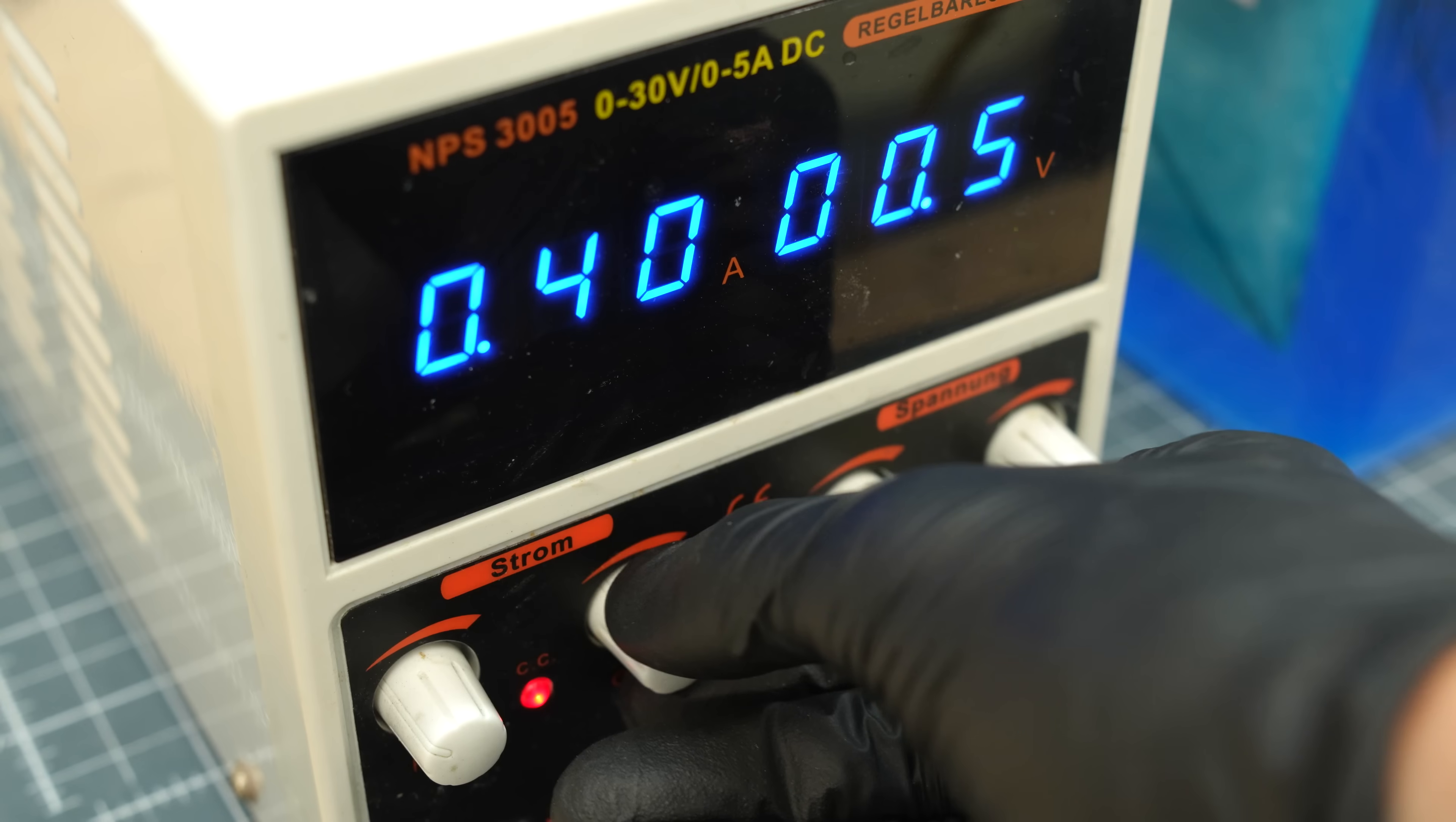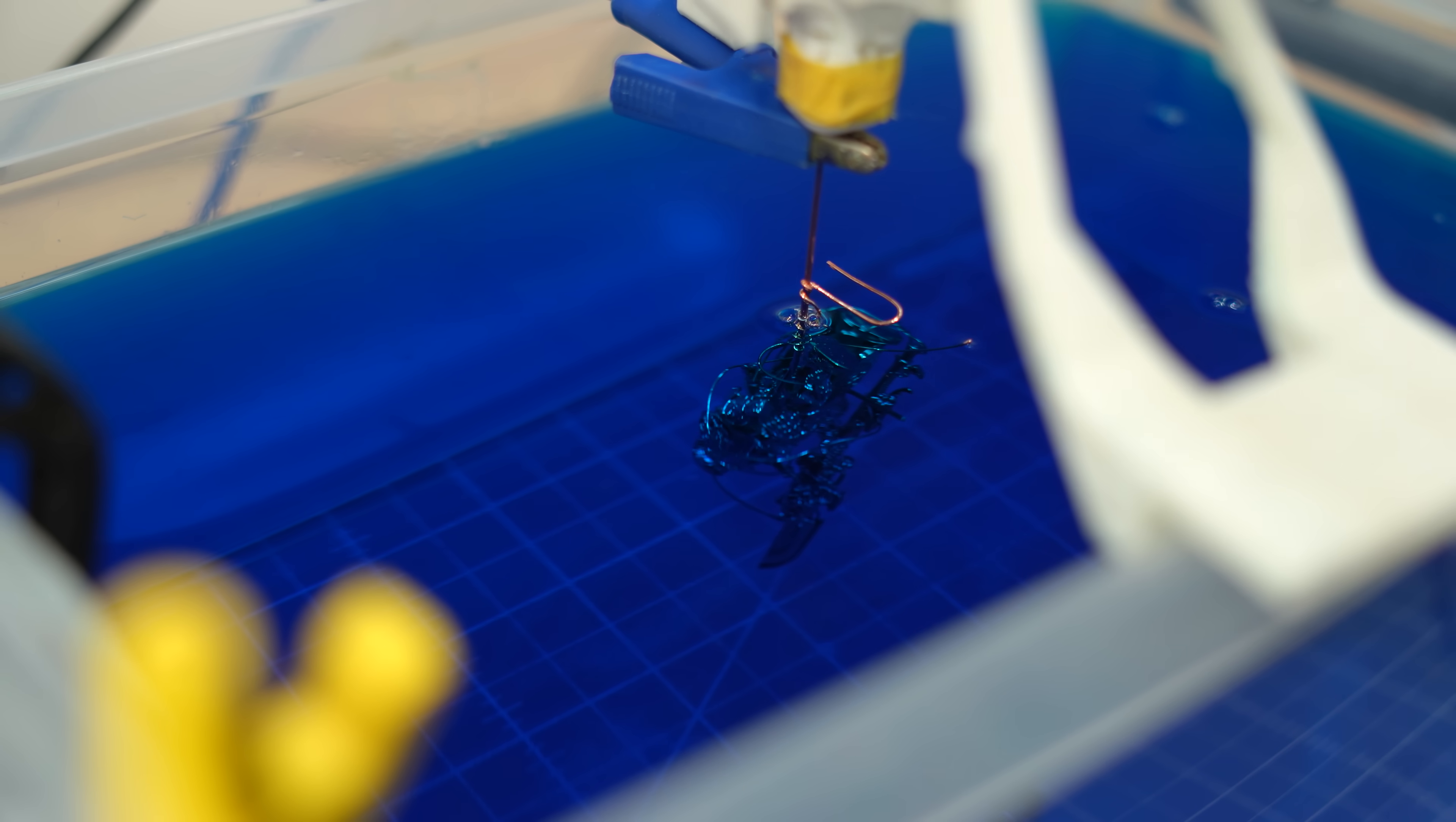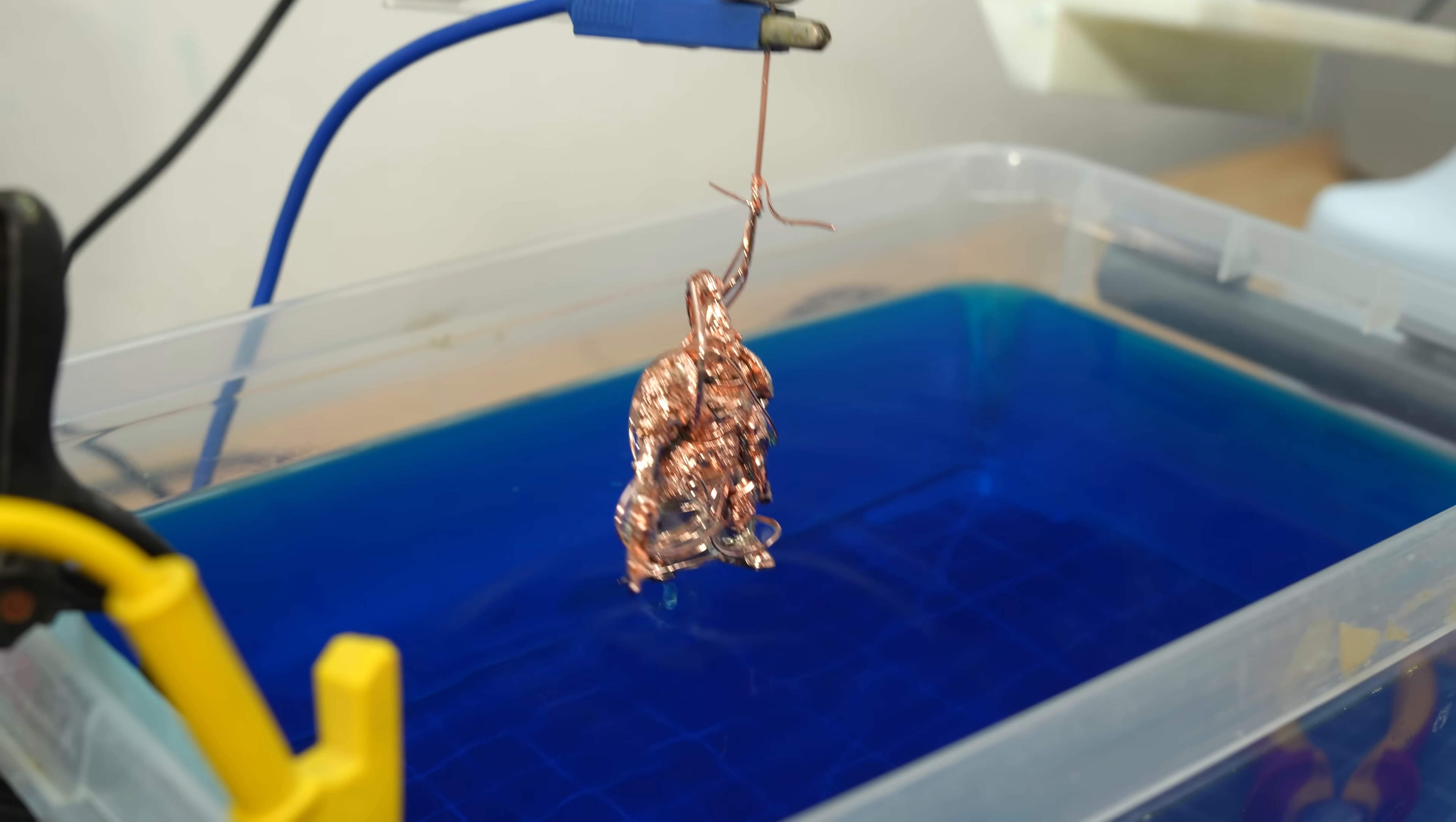Anyway, I ended up guessing by comparing it to similar miniatures I knew the surface area. The formula is 1 amp per square decimeter. With that you will have a deposition rate of 0.5mm per minute. After 4 hours I take them out one by one. That was a total of 20 hours for 5 pieces.